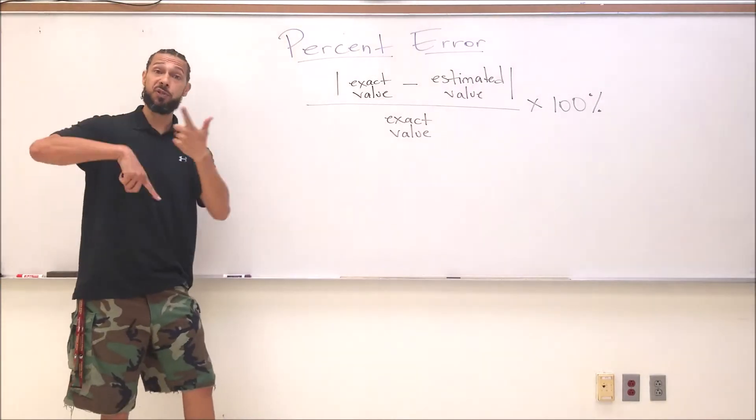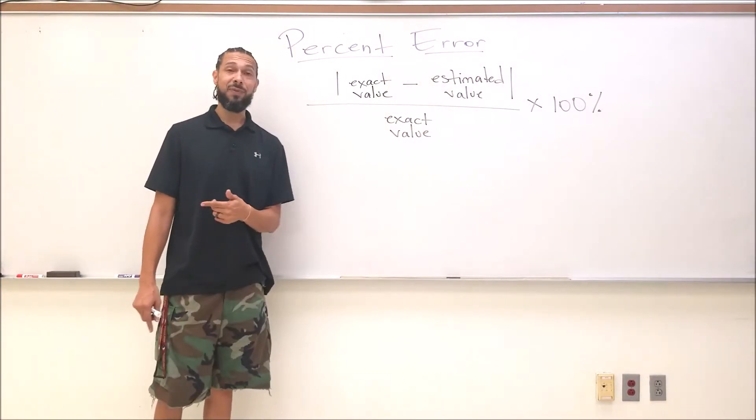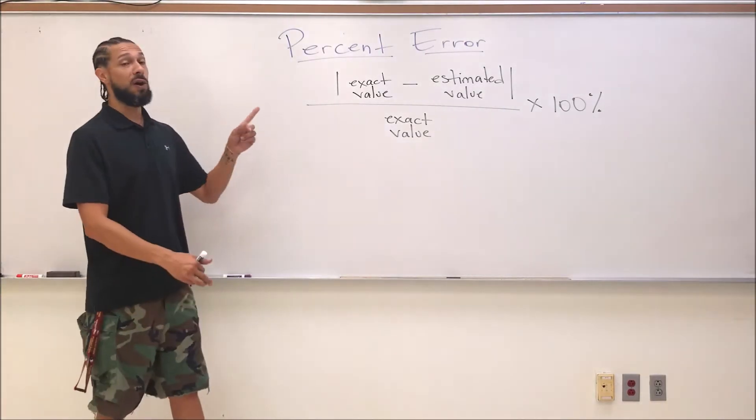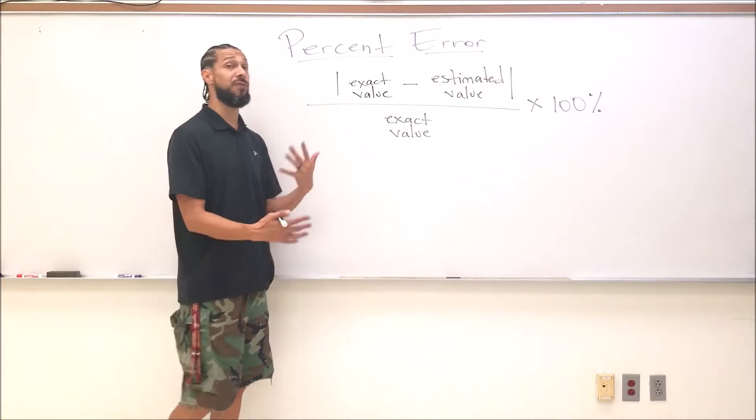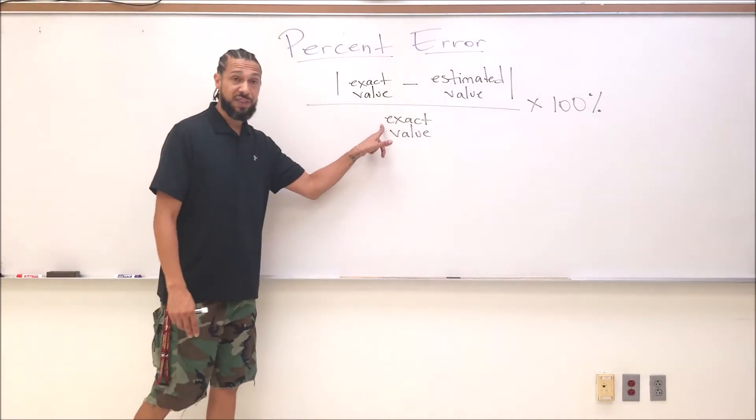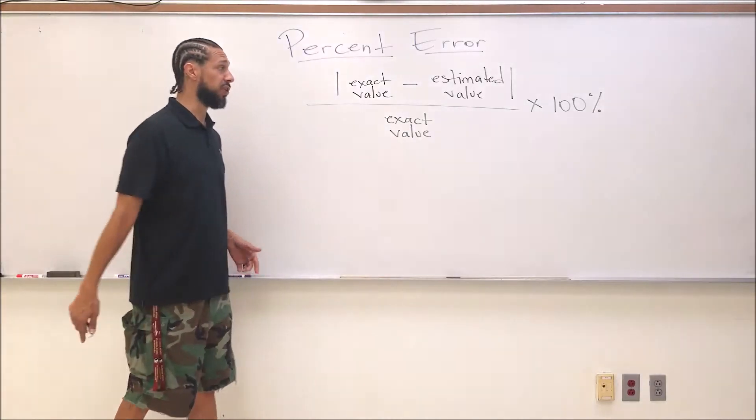To get a percentage, I'm going to divide that difference by the exact value, because this percent error is with respect to the exact value. Being 10% off of 100 is very different from being 10% off of 50, so that's why this exact value is really important here.